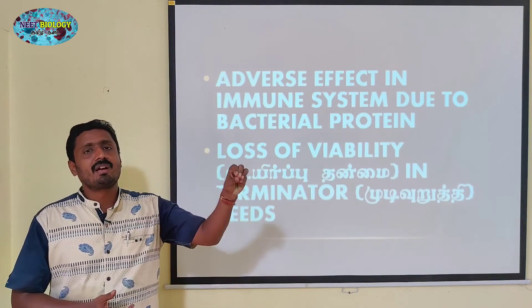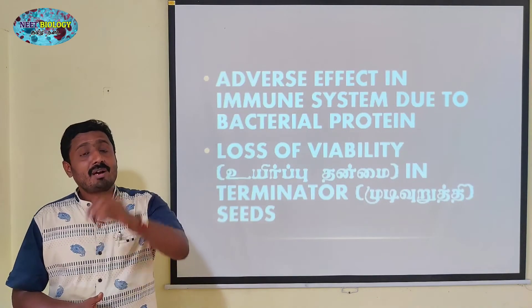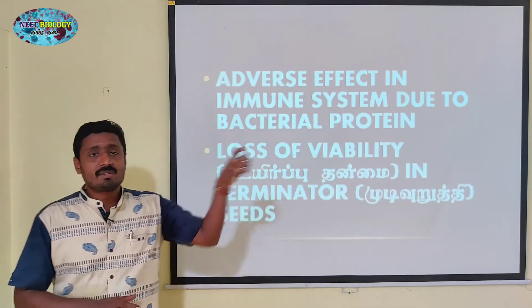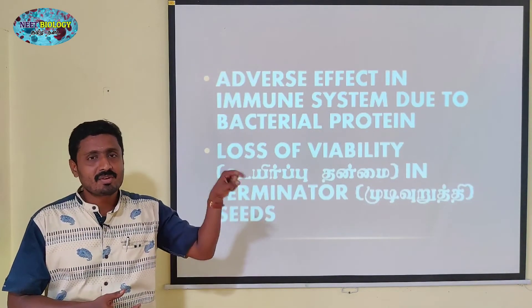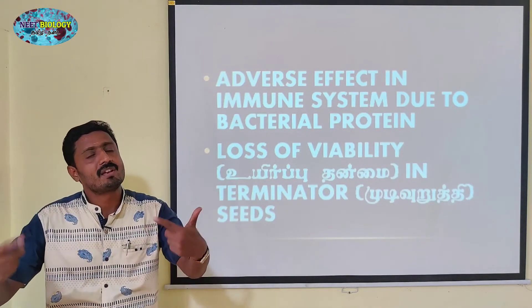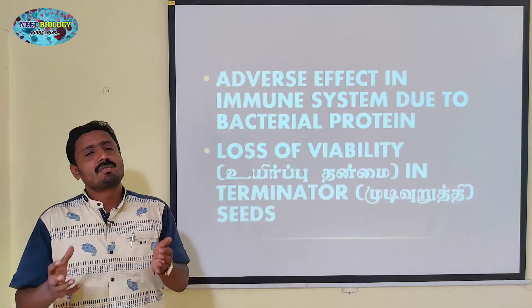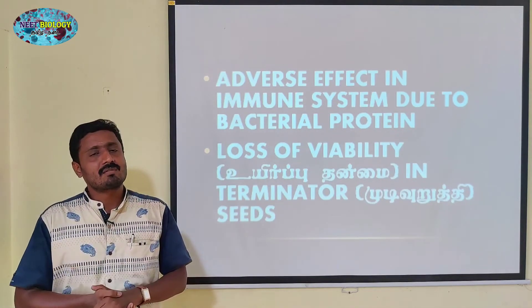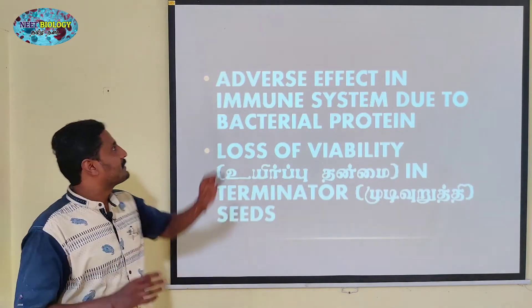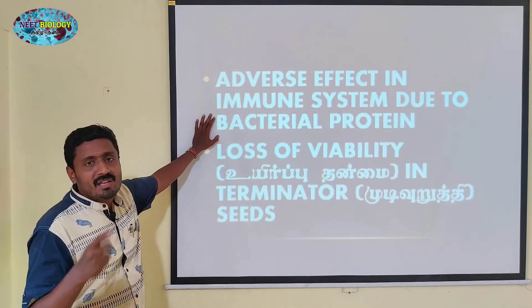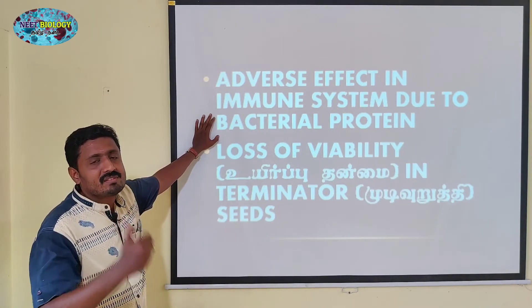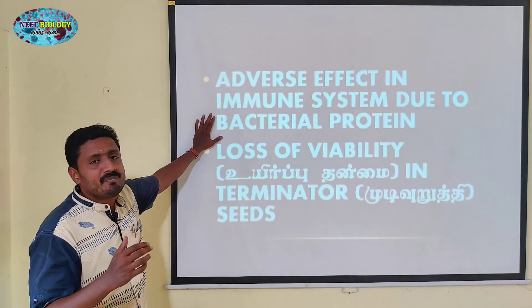The bacteria that we have used in the GM food will be stored continuously in the human system as we eat. If you eat GM food, you go through a process of digestion. At the same time, the immune system will produce antibodies and try to fight the bacteria. Continuous usage means the immune system will be affected.